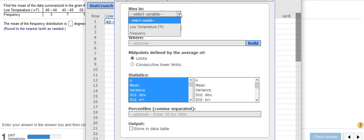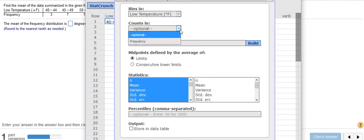Now I'm going to select the variable that I'm interested in. I want to use that low temperature column. And I want to use the frequencies where they are. And then notice here it says the midpoints are defined by the average of the limits. And the limit between 40 and 44, for instance, those are the class limits. So that's my midpoint. And then I can click on Compute.